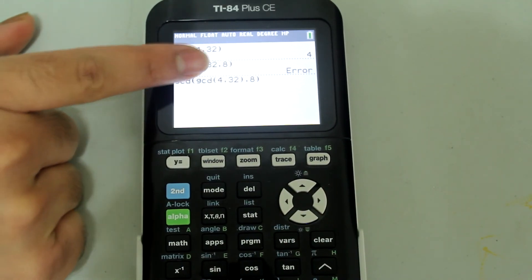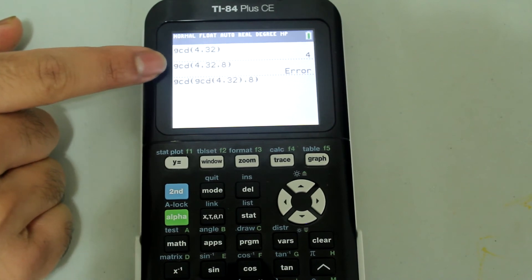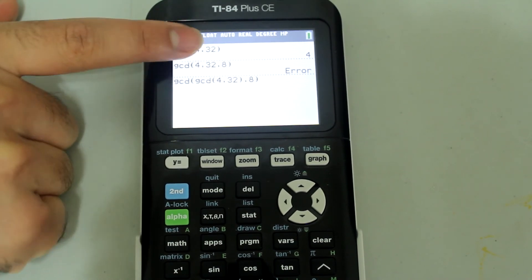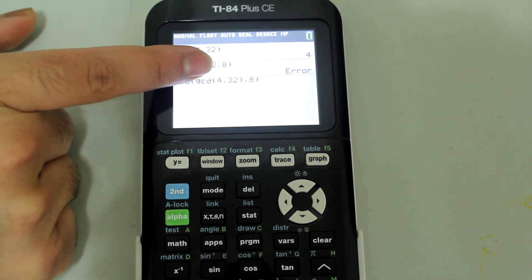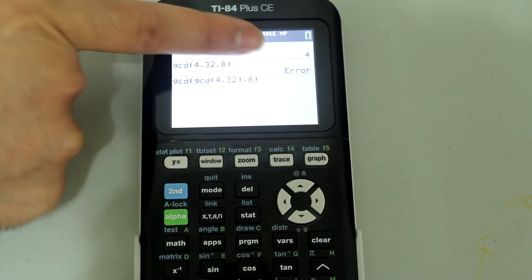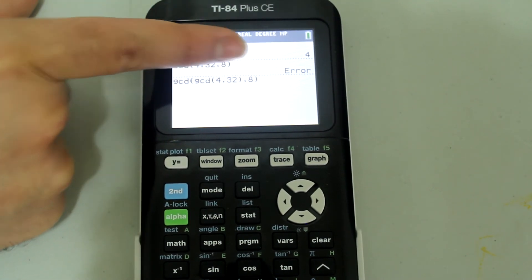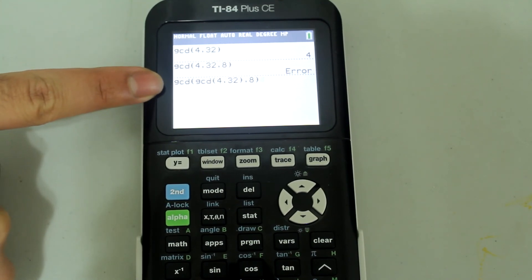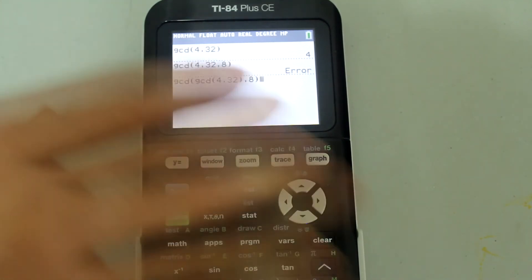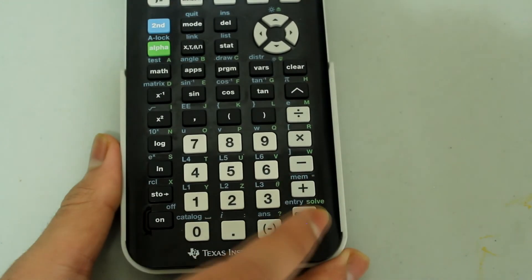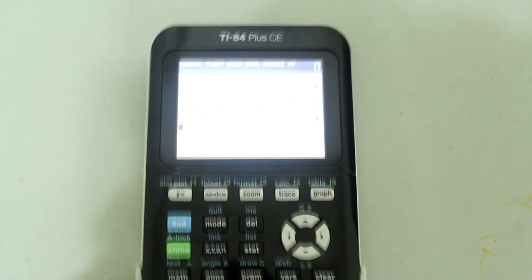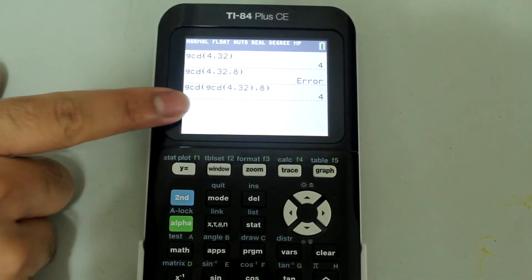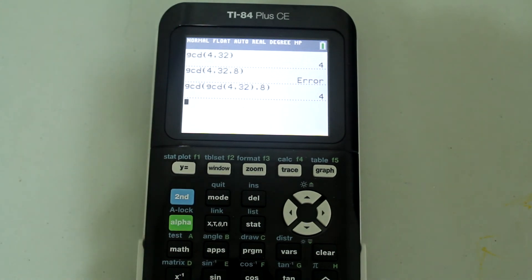So effectively what this outer GCD command is doing is taking the greatest common divisor of 4 and 32 and comparing that with 8 and giving me in return the greatest common divisor of all three numbers. So if I press enter now, I get an answer. And the answer is 4 which is the greatest common divisor of 4, 32, and 8.